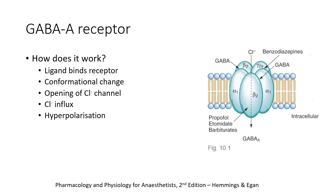The GABA-A receptor is the target for most of the drugs that induce general anaesthesia. Take propofol, for example. Propofol binds to the GABA-A receptor at its alpha-beta interface, or something to that effect. The chloride channel opens, chloride influx occurs, and this results in hyperpolarisation of the cell and an arrest of neurotransmission.